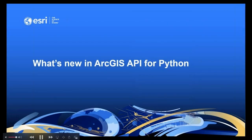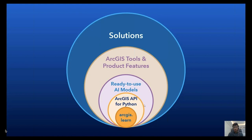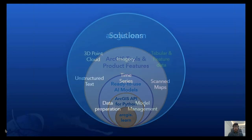Thank you, Amy. Hi, everyone. I'm Divyansh Jha, and I'm working as a data scientist at Esri's New Delhi R&D Center. I'm very excited to talk about the latest developments in ArcGIS API for Python. ArcGIS API for Python consists of the ArcGIS.learn module, which is the heart of all the AI capabilities available in the ArcGIS ecosystem. It is tightly integrated with ArcGIS and provides end-to-end support from export through deployment.